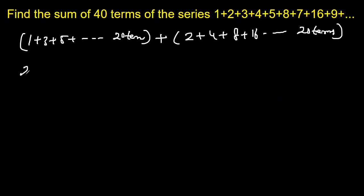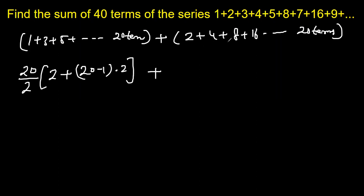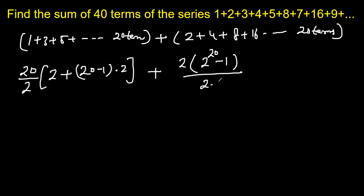The AP sum is n by 2 times (2a plus (n minus 1) times d), so 20 by 2 times (2 times 1 plus 19 times 2). For the GP sum, the formula is a times (r to the power n minus 1) divided by (r minus 1), giving 2 times (2 to the power 20 minus 1) divided by (2 minus 1).